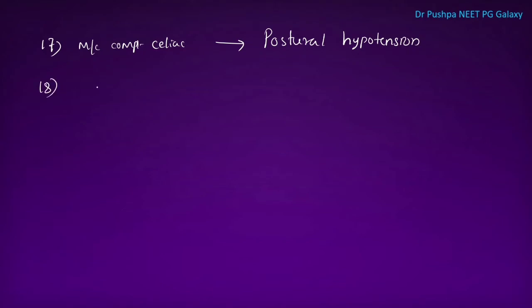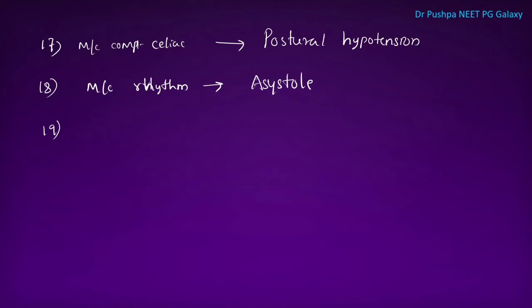The most common cardiac rhythm seen in adults experiencing sudden cardiac arrest is ventricular fibrillation. The surest sign of tracheal intubation is capnography.